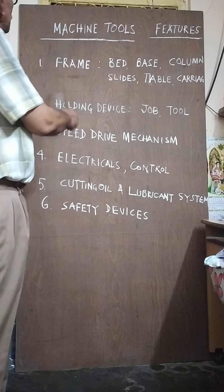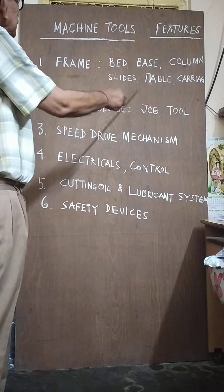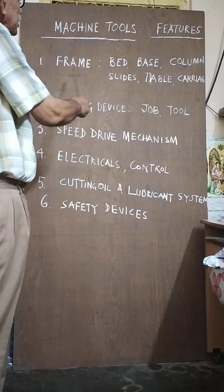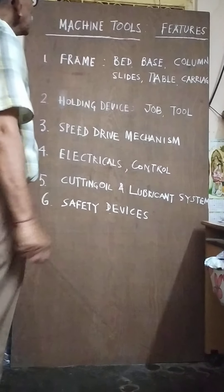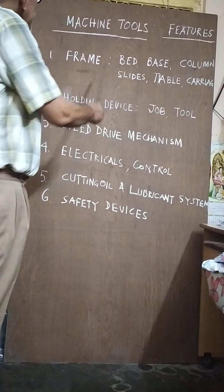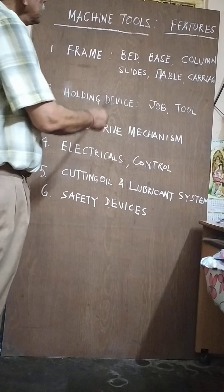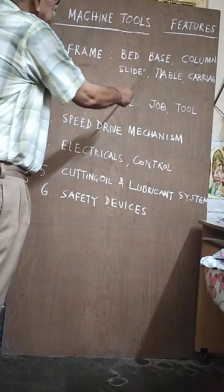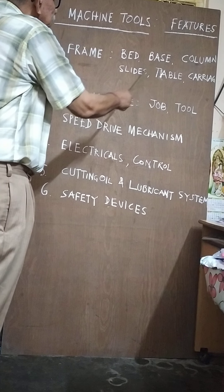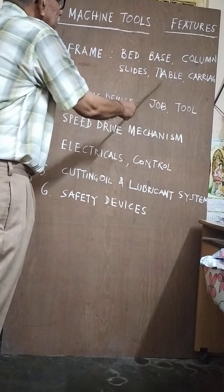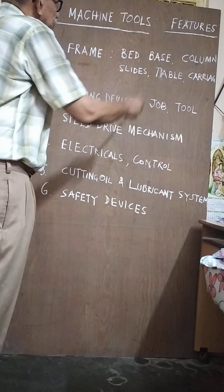The frame is a rigid body of the machine. It constitutes the base, column, slides, table, and carriage.